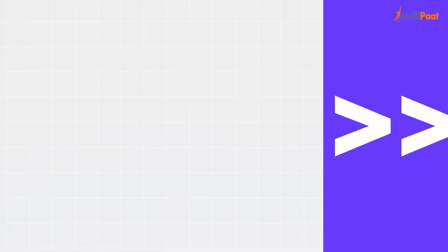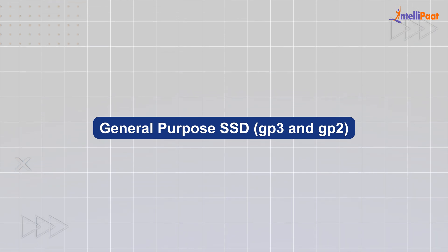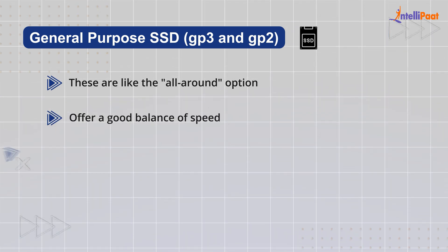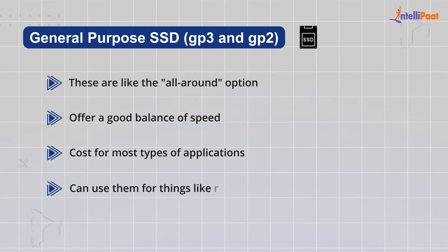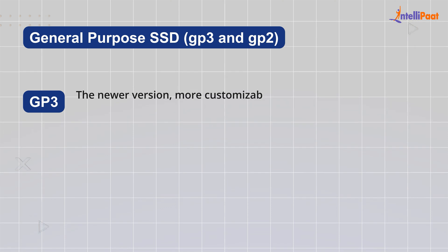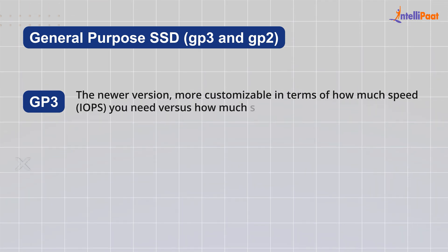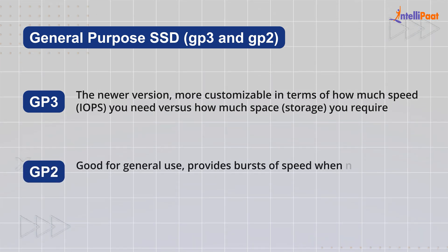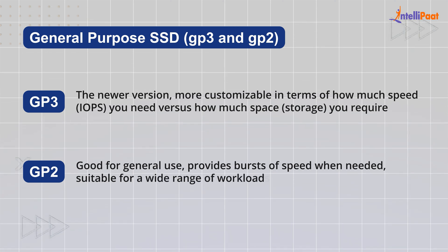EBS offers various SSD (solid state drive) and HDD (hard disk drive) volume types. Starting with General Purpose SSD — GP3 and GP2 — these are the all-around option, offering a good balance of speed and cost for most applications like running websites, applications and databases that need decent performance. GP3, the newer version, is more customizable in terms of IOPS versus storage. GP2 is good for general use, provides bursts of speed when needed, and is suitable for a wide range of workloads.